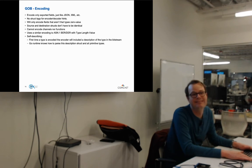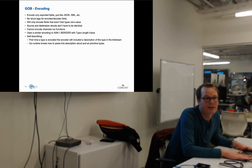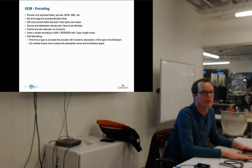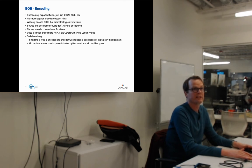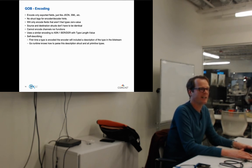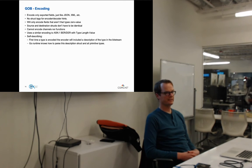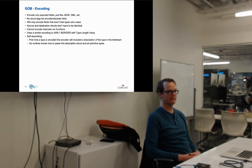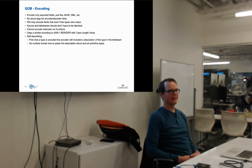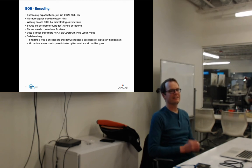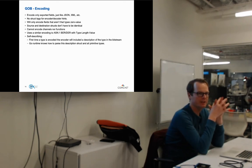Q: Will it encode your struct tags as well, or is it relying on those to be in the struct definition on the other end? A: There are no struct tags for GOB encoding itself. Struct tags are kept at runtime as arbitrary strings, so an encoder could theoretically access them, but since you can't dynamically create types in Go, the receiver wouldn't have anywhere to put that information. That's an interesting question to investigate.